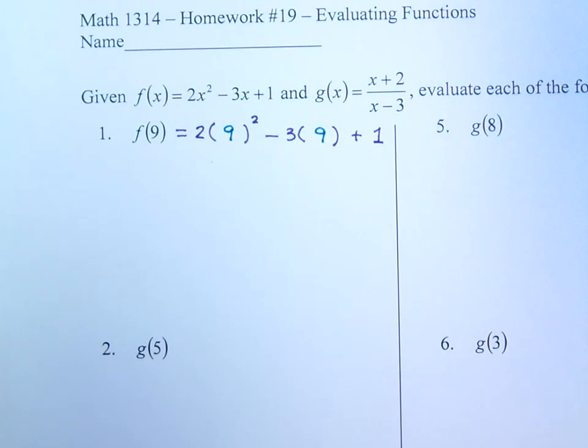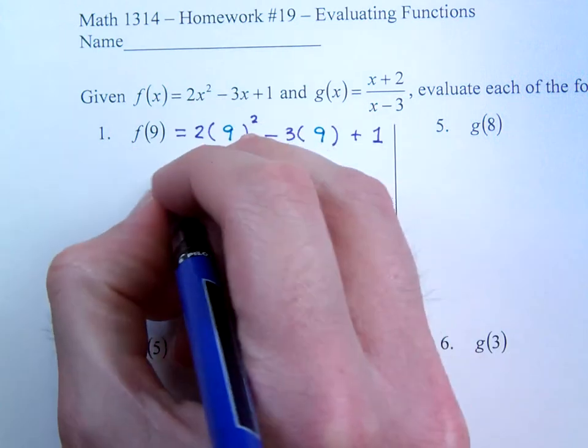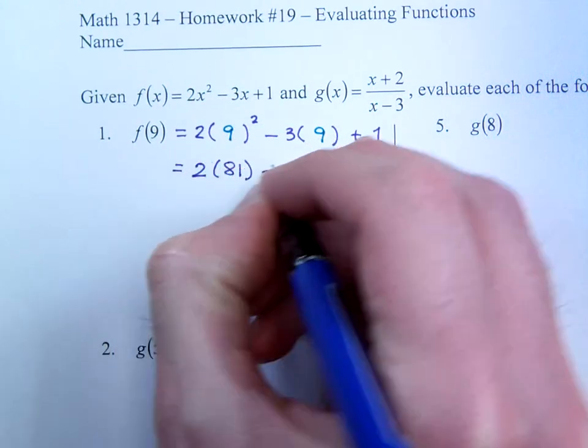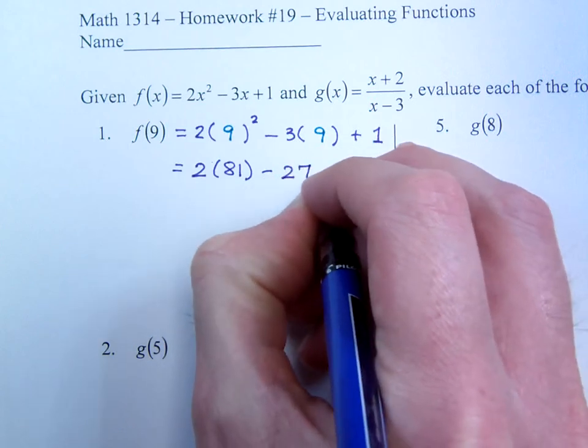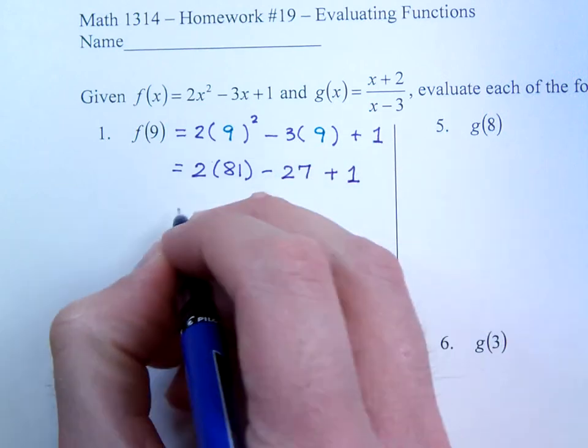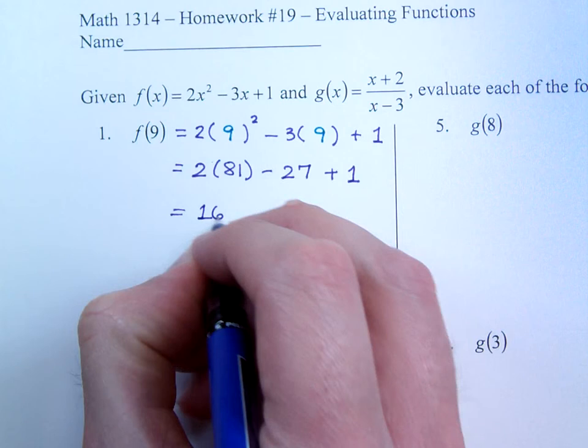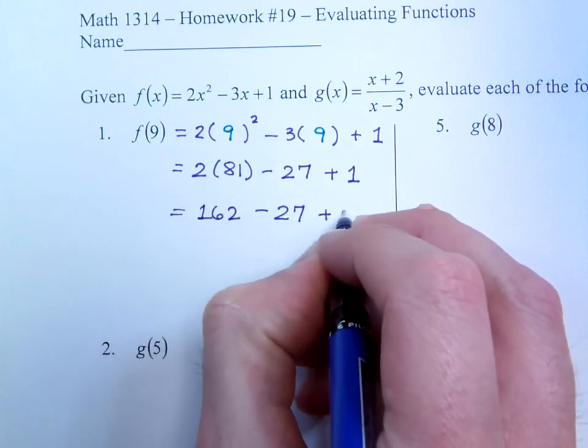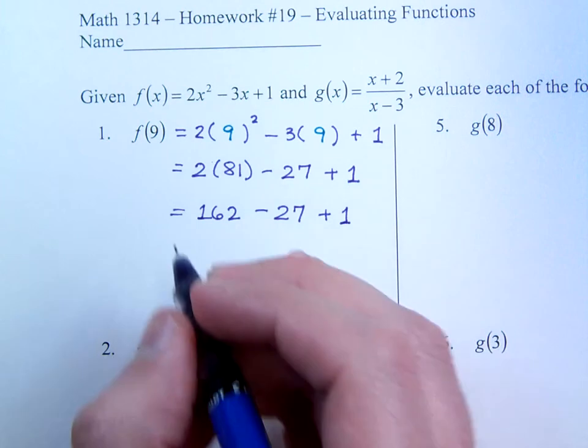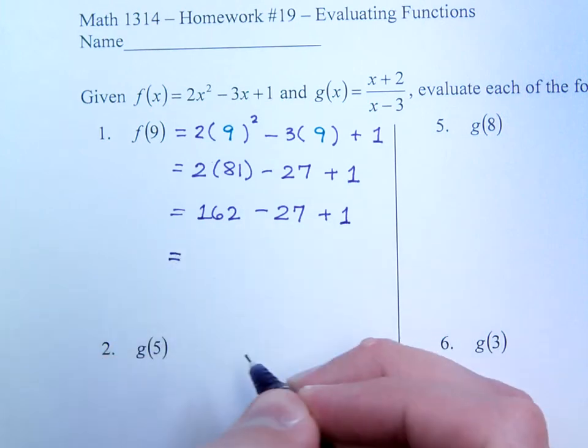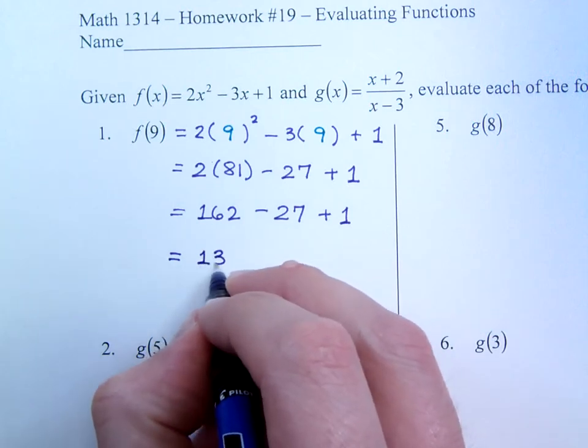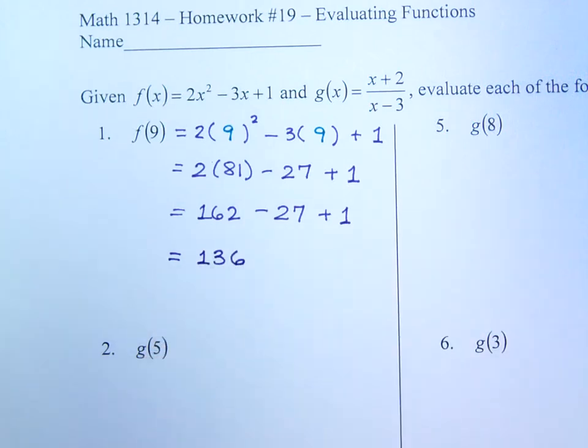And then it's a matter of doing the evaluating, do the math. So this gives me 2 times 81 minus 27 plus 1. So we have 162 minus 27 plus 1. So when we finish this, this gives us 135 plus 1 is 136.